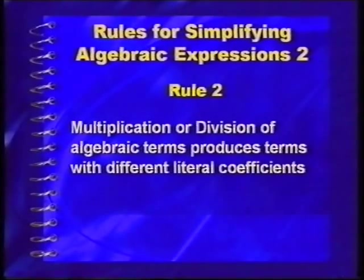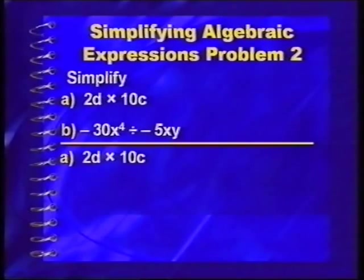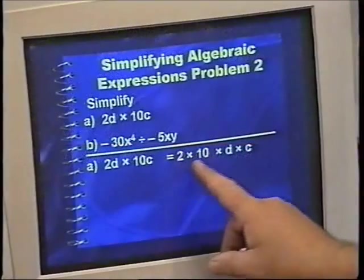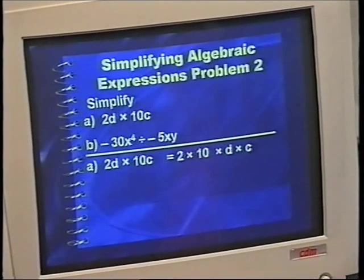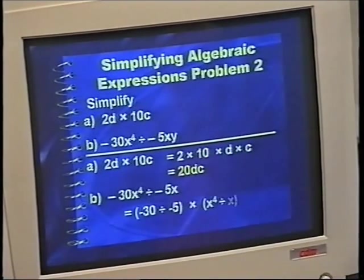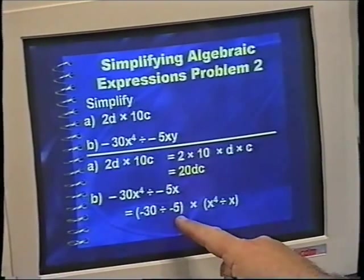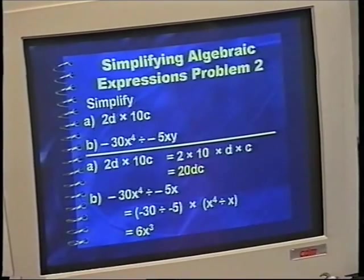When algebraic expressions are multiplied or divided, you can get a different term. That's rule two: multiplication or division of algebraic terms produces terms with a different literal coefficient. For 2D times 10C, we rearrange to get 20DC — a new literal coefficient from D multiplied by C. For a division problem, negative 30 divided by negative 5 gives 6, and x to the power of 4 divided by x gives x cubed, so the answer is 6x cubed.